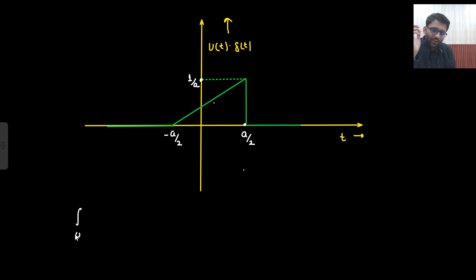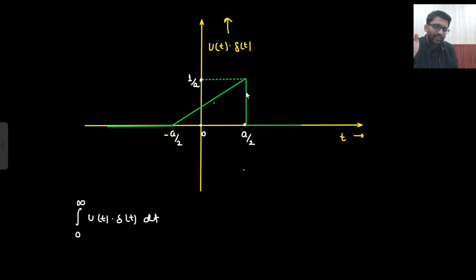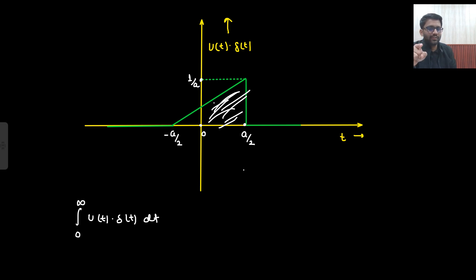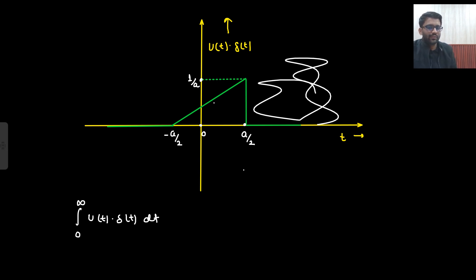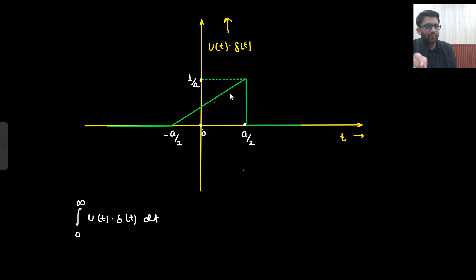I need to find the integral from 0 to infinity of u(t)·δ(t)·dt. This is your 0 point. From 0 to infinity, I need to find this much area — the meaning of integration is area. After A/2 everything is 0, so effectively I only need to find the area from 0 to A/2. This particular area is my target.